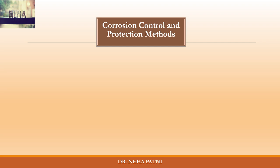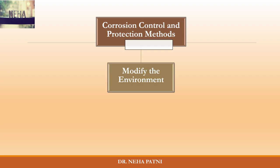Continuing the series on corrosion, today's topic is modifying the particular environment. Basically, what we have to do in this method is reduce the corrosive nature of the environment. You can do this either by the removal of harmful components already present, or you can add a specific substance which neutralizes the effect of the corrosive constituent of the environment.